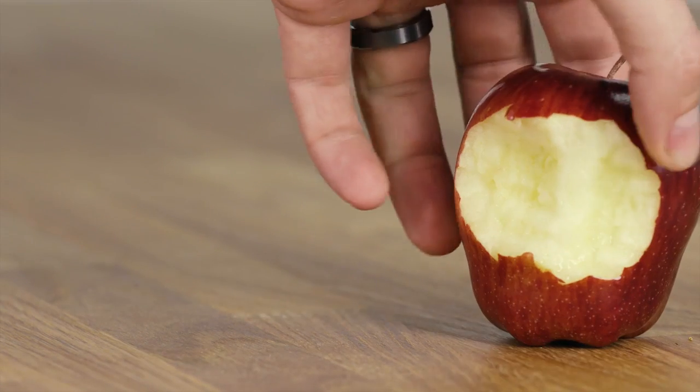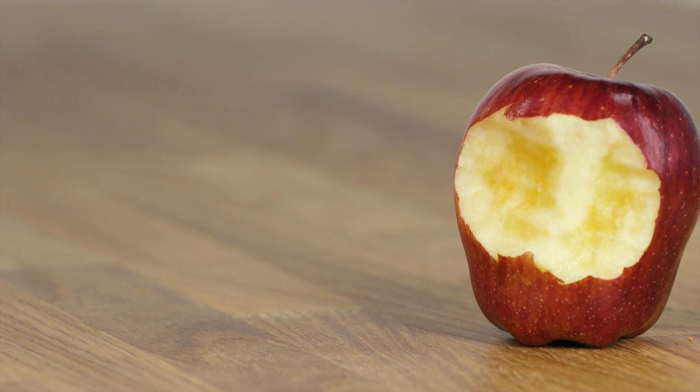But what happens when you take a bite out of the apple? Over time, the cells of the apple react with the oxygen in the air, which results in the browning that you see.